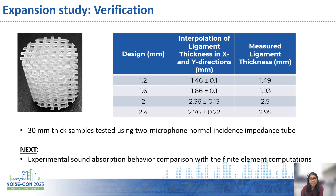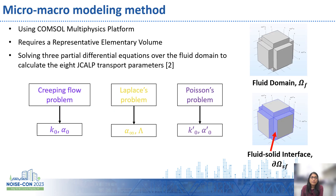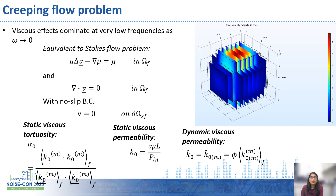The sound absorption behavior is then compared with finite element computations. For the numerical analysis, we are using a micro-macro modeling method, which is a physics-based model that solves for the visco-inertial and thermal energy losses occurring due to fluid and solid interactions in the porous medium. This method requires identifying a representative elementary volume that closely resembles the microstructure geometry of the porous absorber. We then solve three partial differential equations: the creeping Stokes flow problem, Laplace's problem, and Poisson's problem over the fluid domain to extract six transport properties. The Stokes flow problem is used to solve for the viscous losses at low frequencies, solving for the velocity field V with no-slip boundary conditions on the fluid-solid interface to calculate the static viscous tortuosity and static viscous permeability.